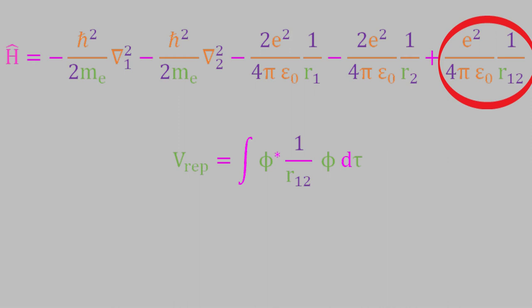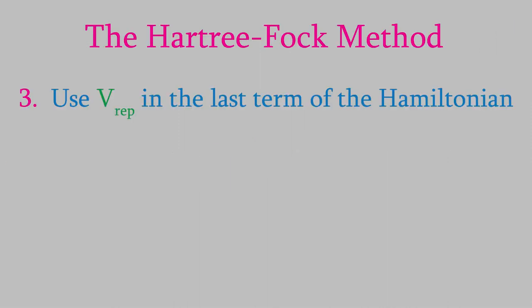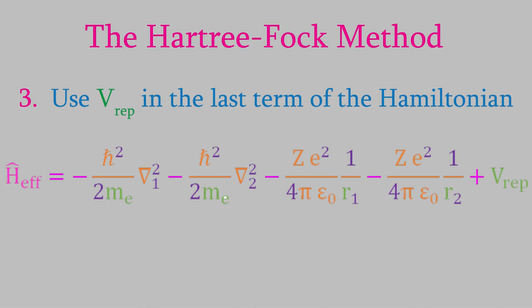So when we solve this integral, we'll have an approximate energy for the electron repulsion. But why is it only approximate? Because the energy we get is being calculated using a trial wave function, not the real wave function, so the energy we get is bound to be slightly incorrect. The next step in the Hartree-Fock method is to use the energy we just calculated as the last term in the Hamiltonian. That gives us an approximation to the Hamiltonian that we'll call h-effective.